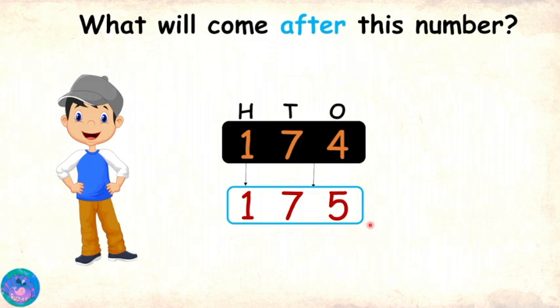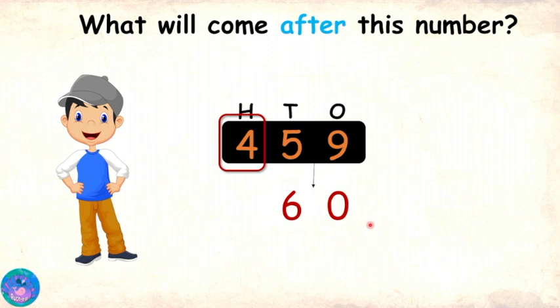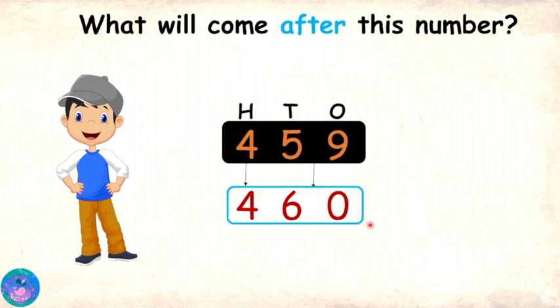Why don't you identify the successor of the number four hundred and fifty-nine? Sure. We will start from the second part. The second part of this number is fifty-nine, and after fifty-nine comes sixty. So, the second part of the successor will be sixty. Coming to the first part, the first part of the given number is four and we will leave it unchanged, so that stays four. The successor of four hundred and fifty-nine is four hundred and sixty.